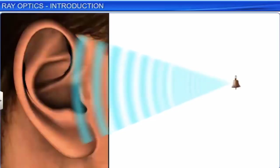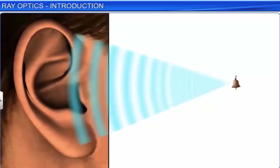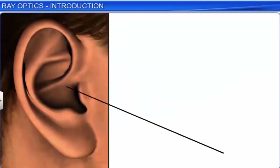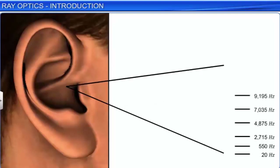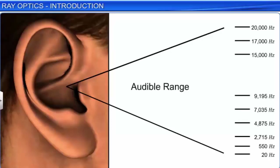The human ear cannot hear sounds of all frequencies. The range of frequencies of sound waves to which the human ear is sensitive is known as the audible range. This audible range is normally from 20 Hz to 20,000 Hz.